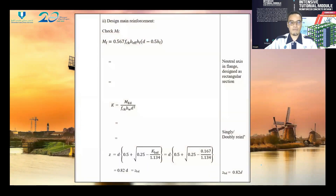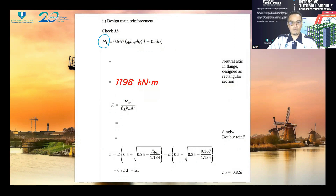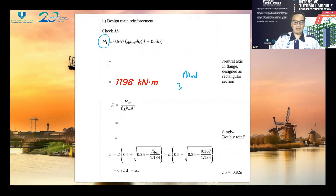For the design of main reinforcement, since this section considers the flange, we have to check MF. Based on the calculations, MF is equal to 1198 kilo-Newton meter, compared to the design moment of 378 kilo-Newton meter. Since MF is greater than the design moment, the neutral axis is located in the flange and we can design it as a rectangular section.